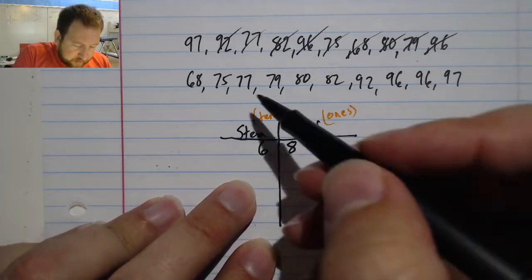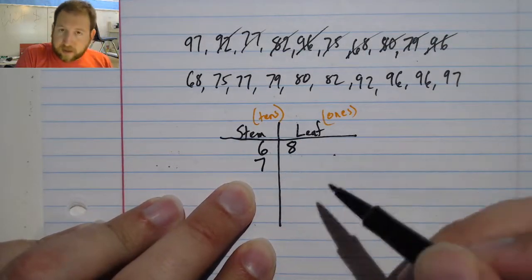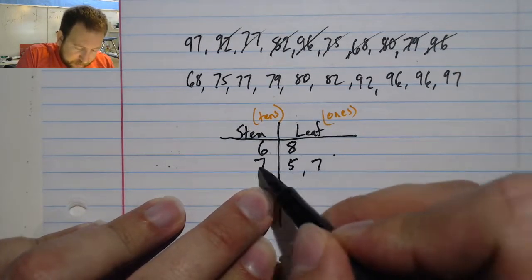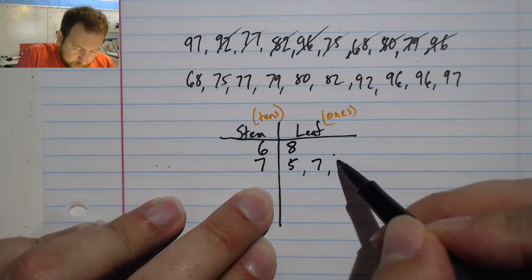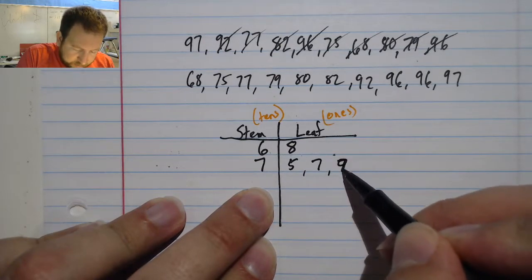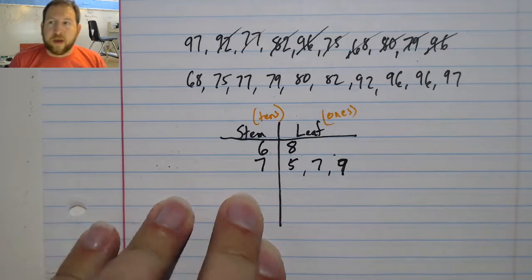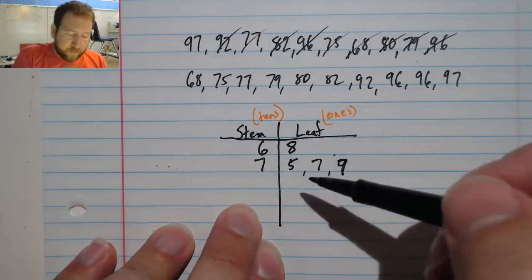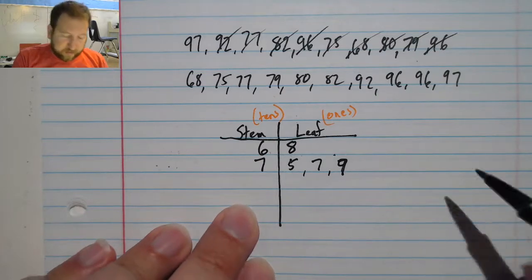My sevens, I have a five, I have seven. So let's look at my 70s. I have a five, a 77, and a 79. So it looks like that. So I can see just from the amount of leaves on my tree that I have more 70s than I do 60s.